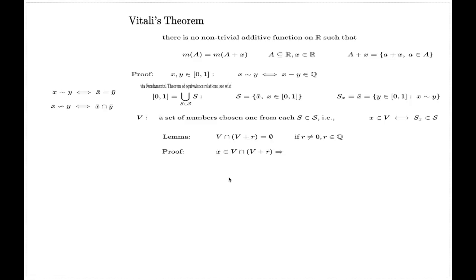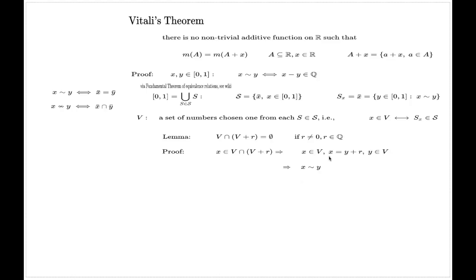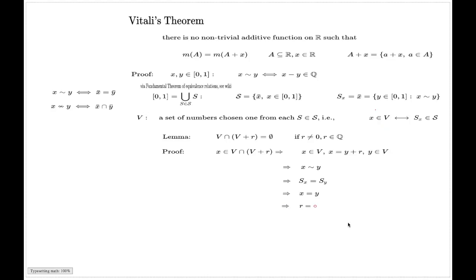To prove this lemma, assume the opposite: there is an element x in this intersection. Then x belongs to V, and x also belongs to V plus r, meaning x equals y plus r for some y in V. From this we get that x minus y equals r, which is rational, so x is equivalent to y by definition. But if x is equivalent to y, their equivalence classes coincide. Since V is chosen with exactly one element per class, x and y must coincide, meaning r equals zero.